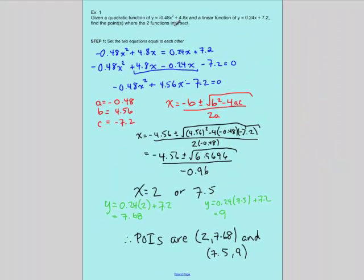Therefore, the points of intersection, or POIs, are (2, 7.68) and (7.5, 9). There you go — given a quadratic function and a linear function, find the points where the two functions intersect, and there they are.